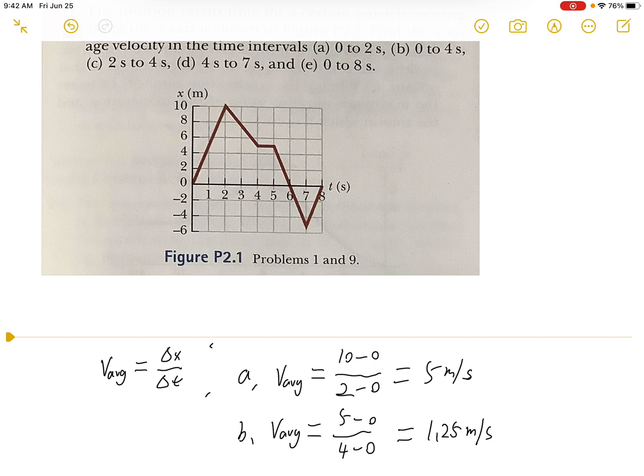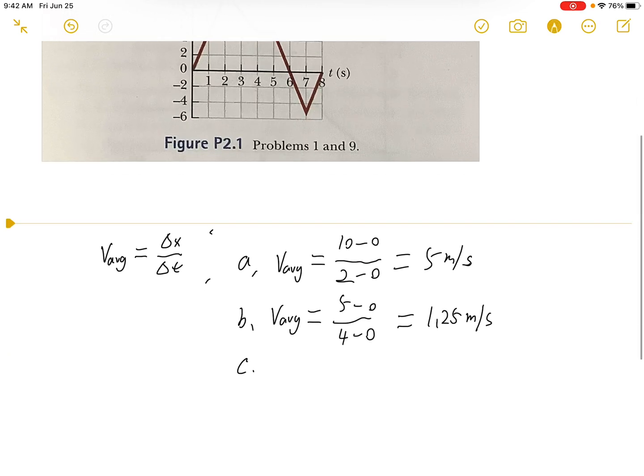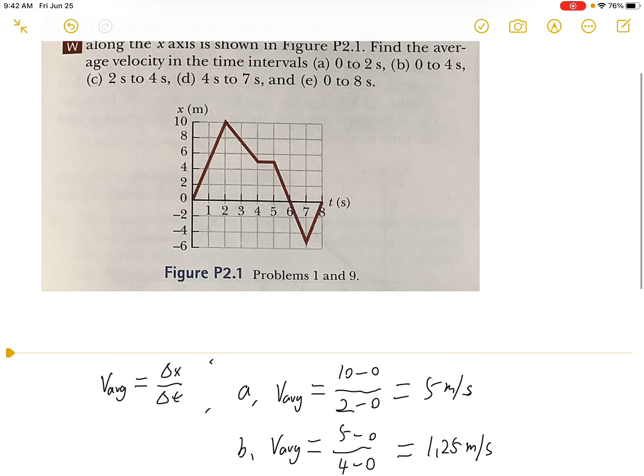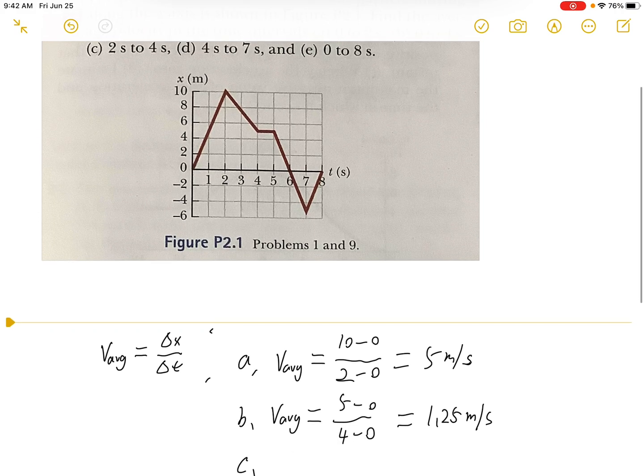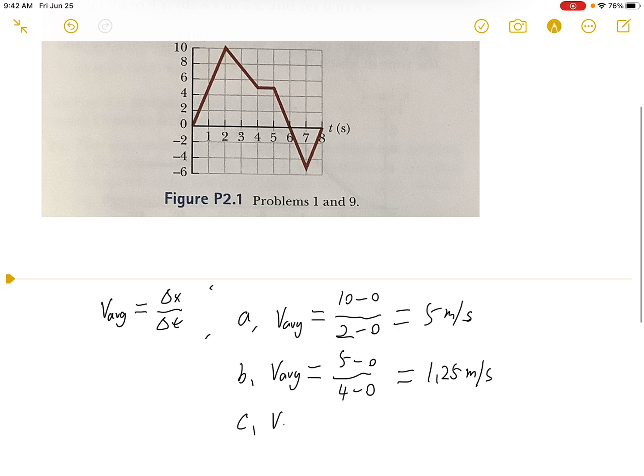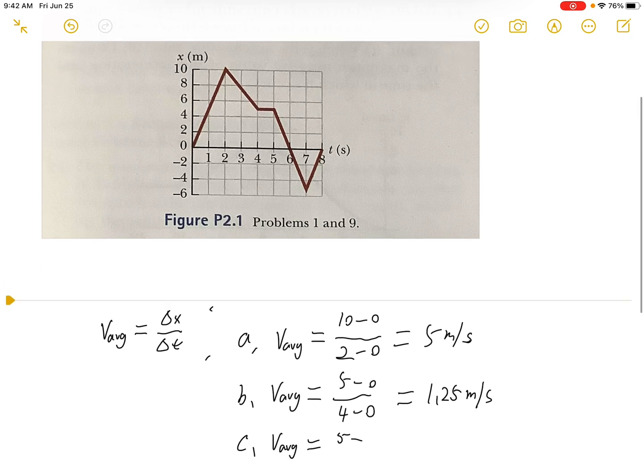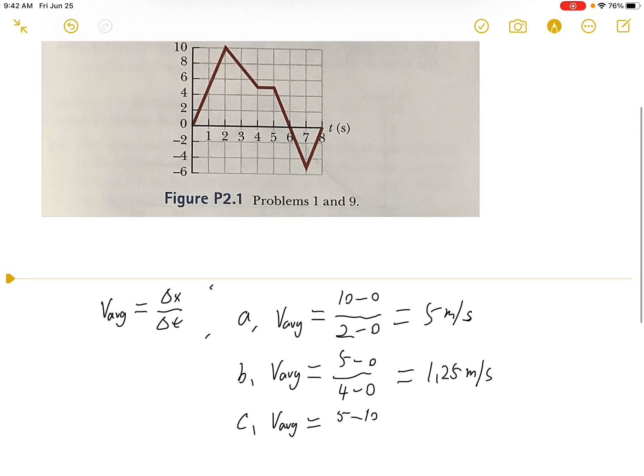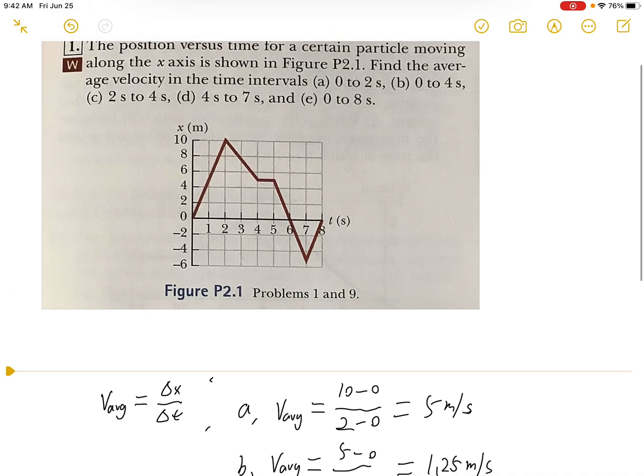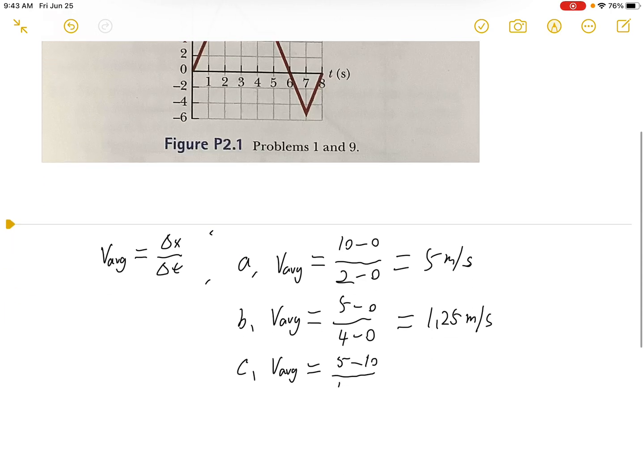We'll do the same for parts c, d, and e. Part c is 2 seconds to 4 seconds. Velocity average equals 5 minus 10 over 4 minus 2. So we get negative 2.5 meters per second.